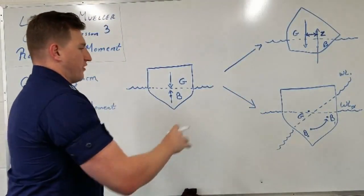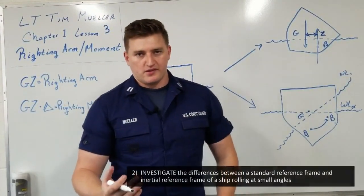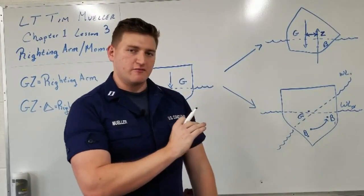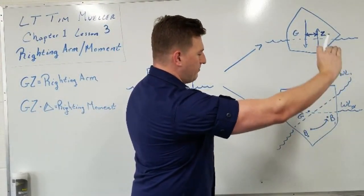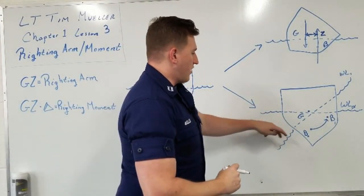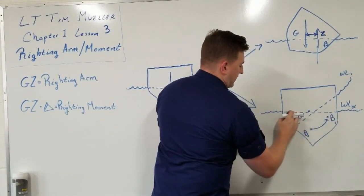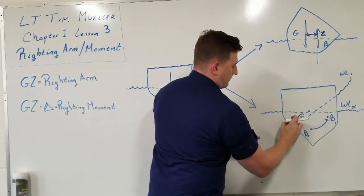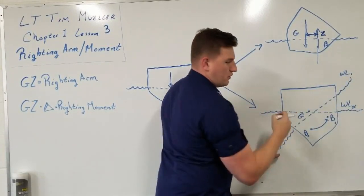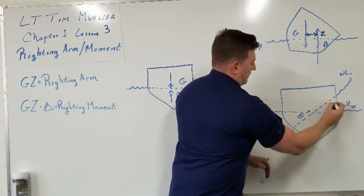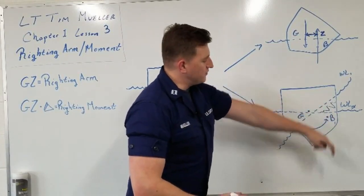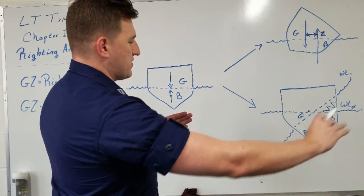Now let's go into the inertial frame. We talked in previous videos about how we lose buoyancy on one side and gain it on the other side, and that is what causes the center of buoyancy to shift over and up, swinging through that arc. In this inertial frame, we're going from this waterline — so this shape and this wedge here are submerged. When we move to waterline one, this wedge is no longer submerged, and this wedge on the other side is submerged. We have the shape that is always submerged, plus the new wedge, bringing that center of buoyancy over.